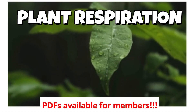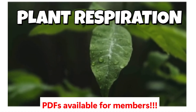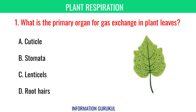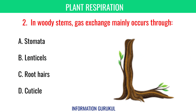In this video, we will discuss questions on plant respiration in our ongoing series of biology. What is the primary organ for gas exchange in plant leaves? Stomata. In woody stems, gas exchange mainly occurs through lenticels.